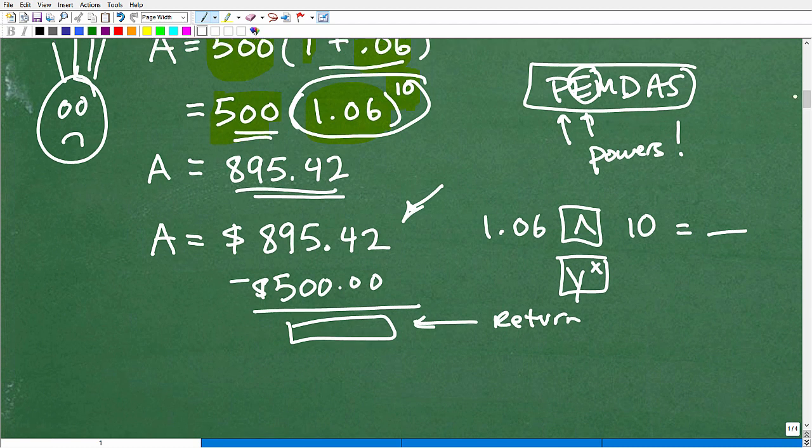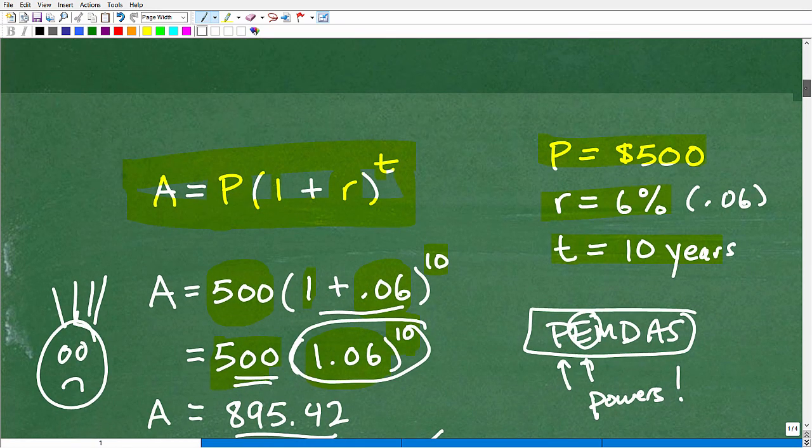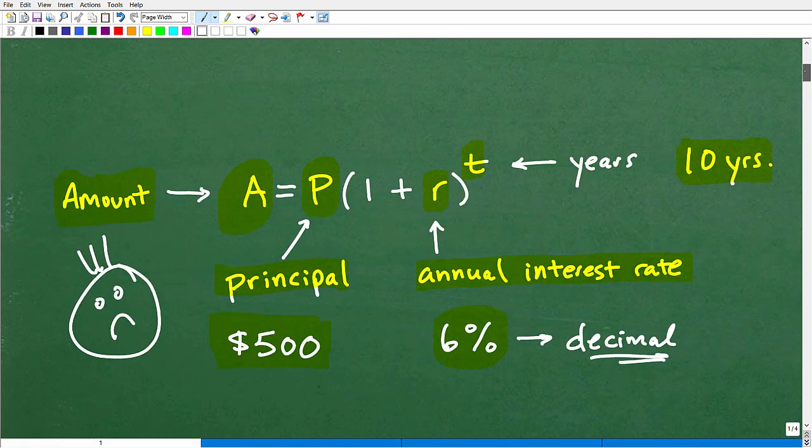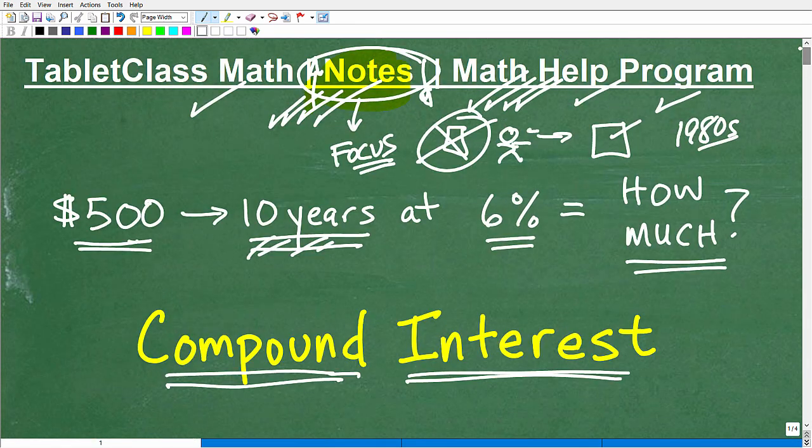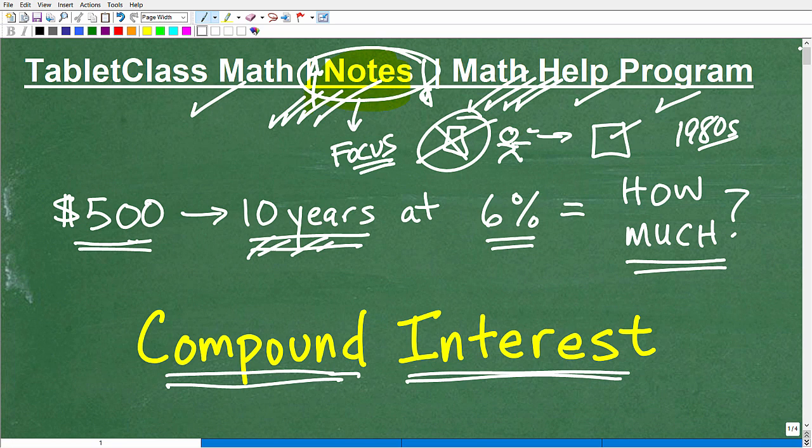So how much money would we have made? This is our final amount. So if the question is how much money was made in this investment, you have to subtract that from our original, right, our original investment from $500, and then we'll get this right here would be our actual return. This is how much money we made. So you've got to be careful because if a question is, like, how much money did you make on this particular investment?